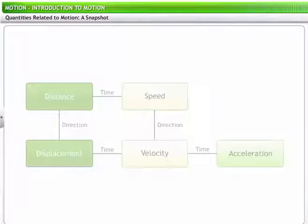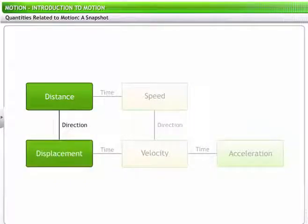To summarize, let's take another look at the relationships between the quantities we just studied. Distance represents the extent or length of motion. When distance is mentioned with the direction, you get displacement. A change in distance with respect to time gives you speed of motion. Similarly, the rate of change of displacement gives you velocity. When you measure the change in velocity with respect to time, you get acceleration.